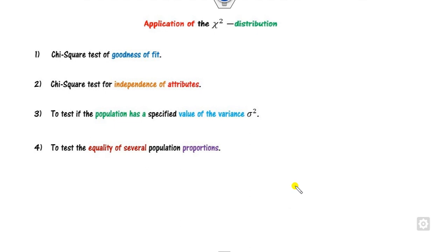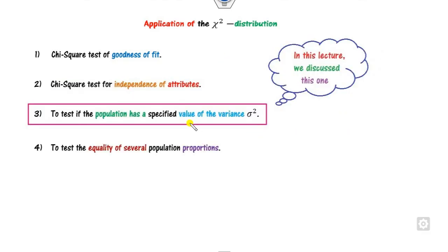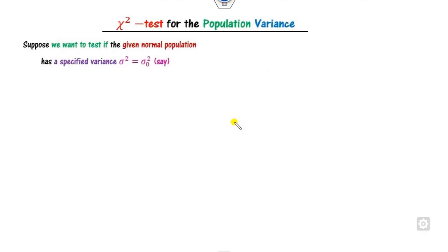There are many applications of the chi-square distribution, such as goodness of fit, attributes, population variance, and proportions. The first two we already discussed in our last two lectures, available on the YouTube channel. In this lecture, we will see how you can test whether the population has a specific variance or not. We will briefly recall what is the chi-square test for population variance.